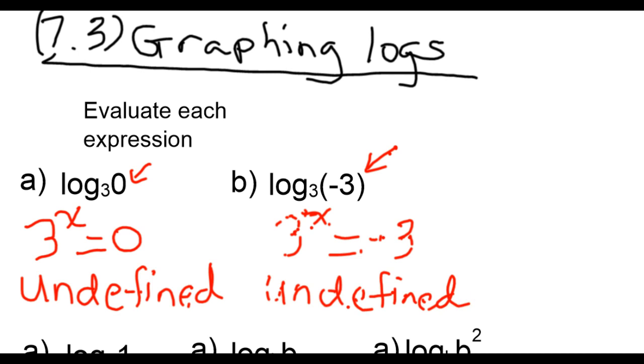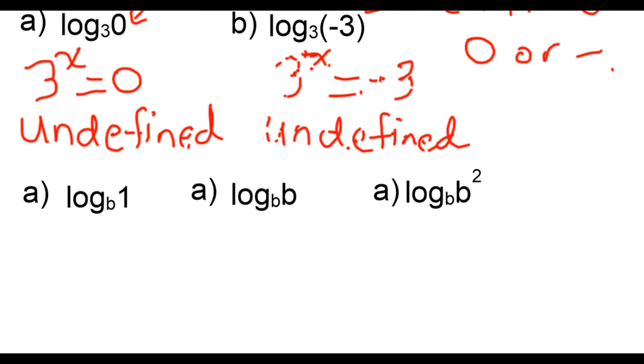So ultimately, we can say the argument of a logarithmic expression can never be 0 or a negative. It must be positive value. If you do see a 0 or a negative there, it's undefined. Now let's look at three more examples that will help us graph.